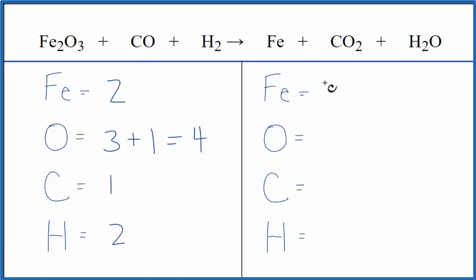On the product side we have one iron, oxygens we have two plus the one, so we have three of those, one carbon, two hydrogens.